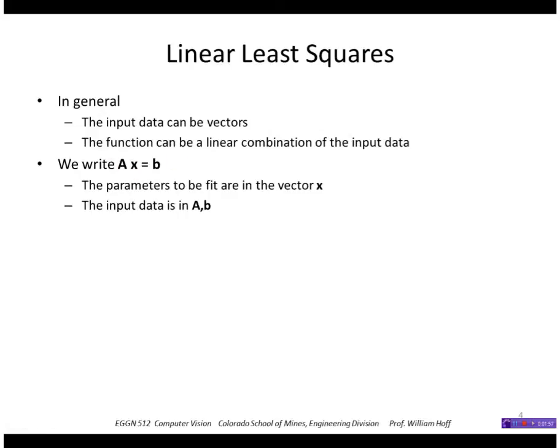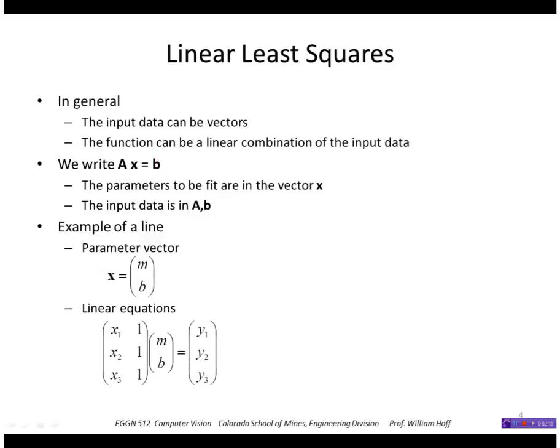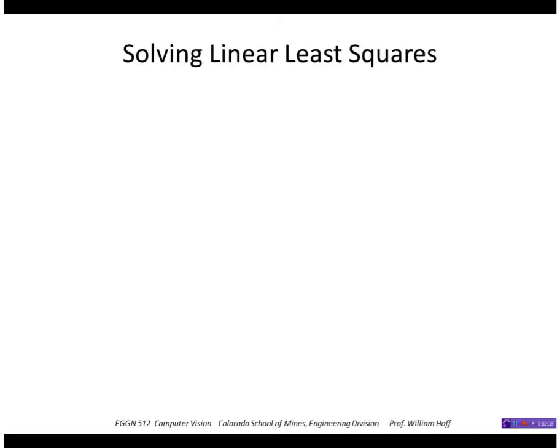We put the expression for the model in the form AX equal B, where the parameters to be fit are in the vector X and all our knowns are in the matrix A or the vector B. So in the example of the line, our unknowns are the M and B values. We put that into this vector X and the matrix A is these measured values of X1, X2, X3 and the B vector is this Y1, Y2, Y3.